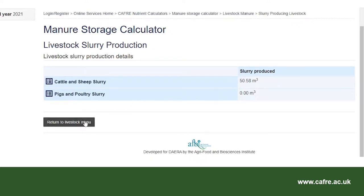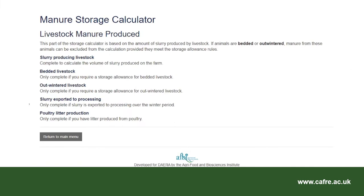Select return to livestock menu. An allowance can be made for livestock on bedded accommodation if livestock are outwintered or if slurry is exported for processing over the winter period. There is also an option to calculate how much storage capacity is required for poultry units where this is applicable. Select return to the main menu.